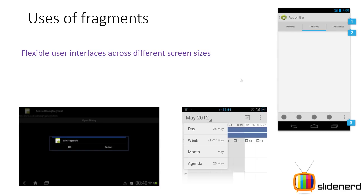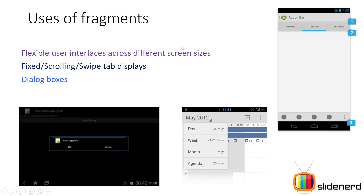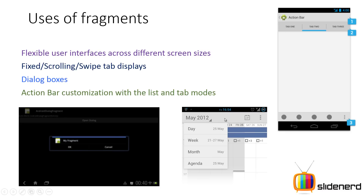Let's talk about the uses of fragments. The first is to create fixed, scrolling, and swipe tab displays. A fixed tab is the normal one; a swipe tab changes when you swipe on the screen; and a scrolling tab has a very similar effect. We'll discuss the differences between each of these tabs in upcoming videos. Dialogues are made purely using fragments now — older approaches existed but now it's strictly fragments. Finally, action bar customization with list and tab modes: the action bar is the element at the top of every app where you can add menu items, tabs, or a vertical drop-down list. All these customizations are possible with fragments.